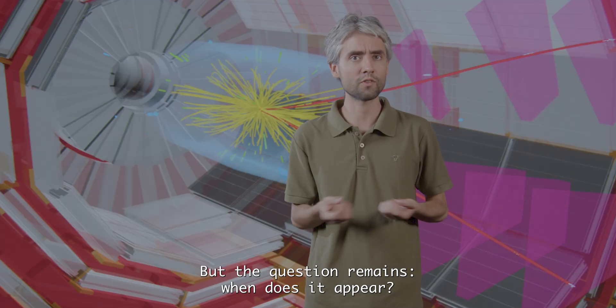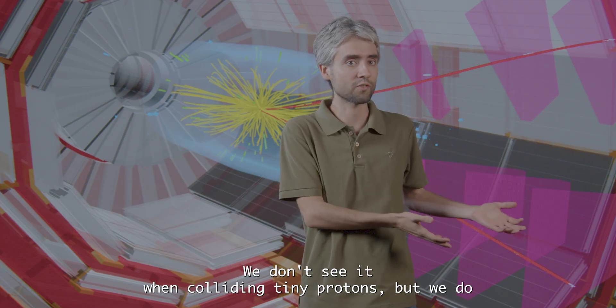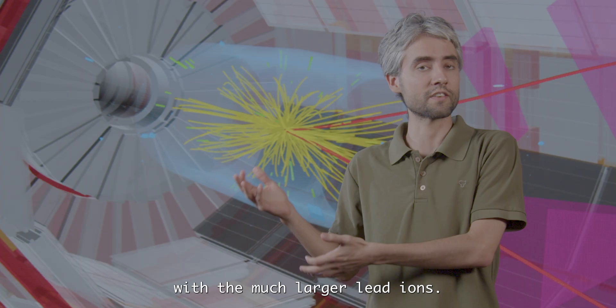But the question remains, when does it appear? At which point do we start forming this plasma? We don't see it when colliding tiny protons, but we do when the much larger lead ions.